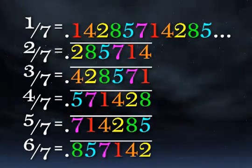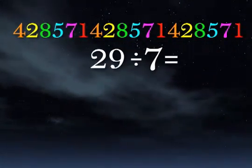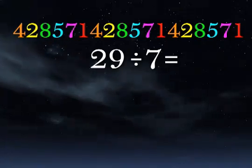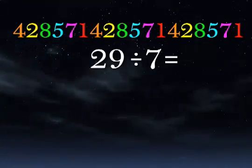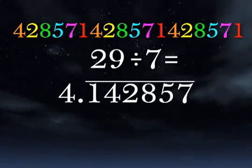So answer this question in under 5 seconds. What's 29 divided by 7? The answer is 4.142857.